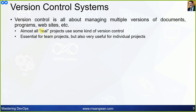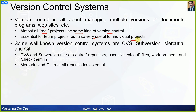Almost all real projects use some kind of version control. We can't work in IT without version control. If you are a developer, you must use version control. It is essential for team projects but also very useful for individual projects. Some well-known version control systems are CVS, Subversion, Mercurial, and Git.